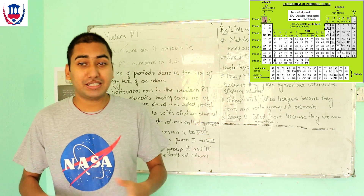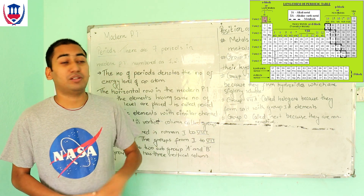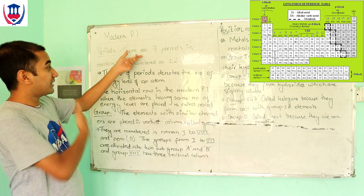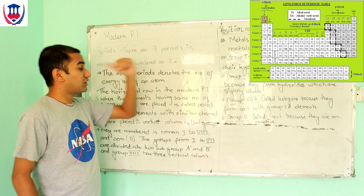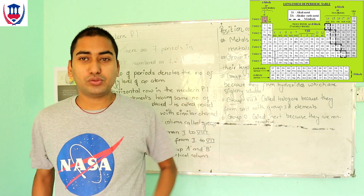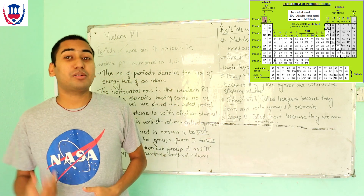Now let's go to the Periods. The number of Periods is 7, numbered using the natural number system: 1, 2, 3, and so on.